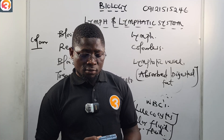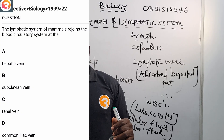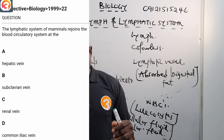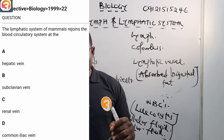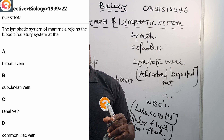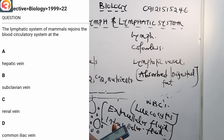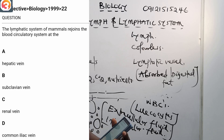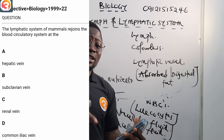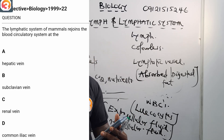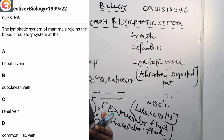Let us now answer JAMB questions. 1999 number 22 says: the lymphatic system of mammals rejoins the blood circulatory system at — A: hepatic vein, B: subclavian vein, C: renal vein, D: common iliac vein. The correct answer is B — the subclavian vein. The lymphatic system drains into collecting ducts in the two subclavian veins, which join together to form the superior vena cava.